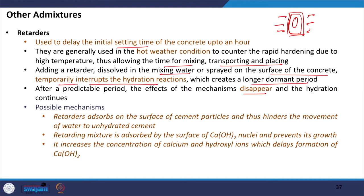Various mechanisms have been proposed for how retarders work. Retarders adsorb on the surface of the cement particle — similar to plasticizers — creating a sheet around the cement particle that prevents it from coming in direct contact with water. This prevents water from interacting with the cement particle and delays hydration. This is what plasticizers and superplasticizers also tend to do.